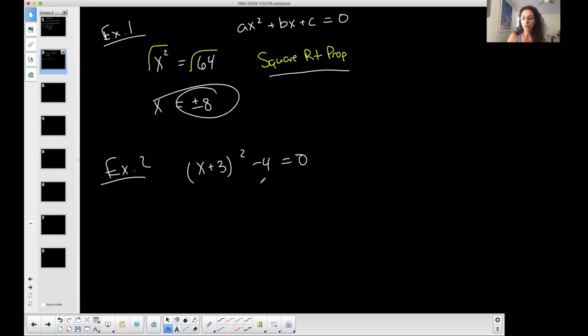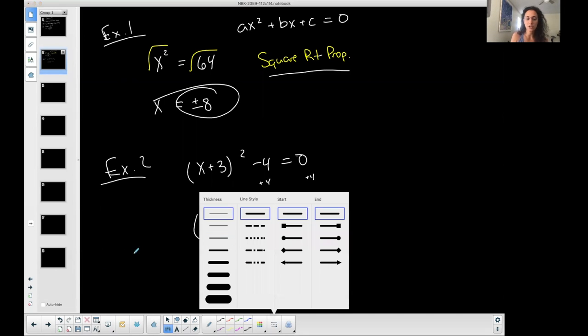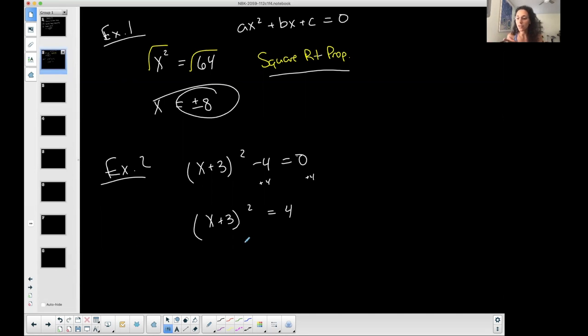If I add four to both sides, then I'm able to isolate the x plus three squared, the squared situation. And since I'm able to isolate the squared situation, where on the right-hand side I have nothing but a number, a constant, I am allowed to use the square root property again.